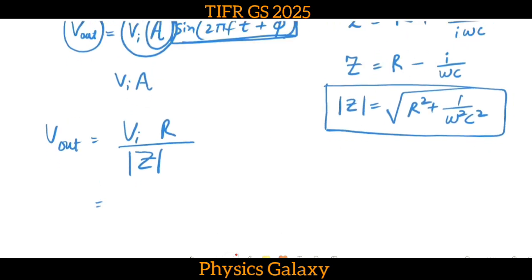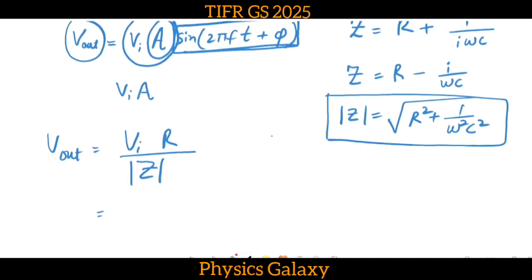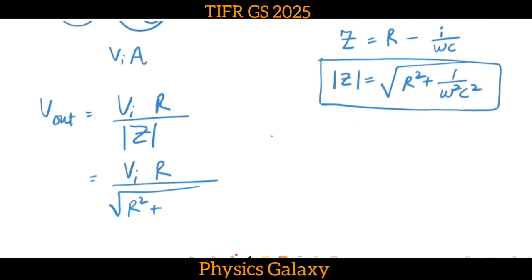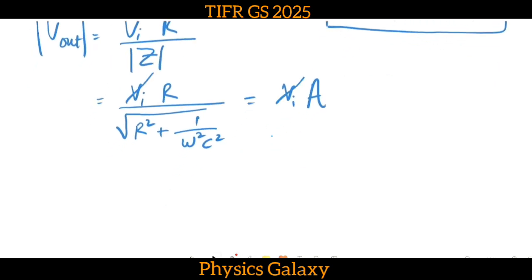Because we are talking about only magnitude, it will be given by V_i times R divided by the magnitude of Z, that is square root of R² plus 1 by ω²C². V_i cancels out.